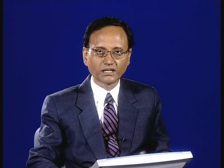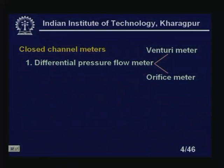Looking at closed channel meters — in a closed pipe, we mostly use differential pressure flow meters such as venturi meters and orifice meters. Variable area flow meters — the rotameter — are also used in closed channels. In open channel meters, such as for irrigation purposes, we need to measure the velocity of fluid to calculate total liquid quantity. For open channel, we have two types: weirs — V-notch and rectangular — and the pitot tube.